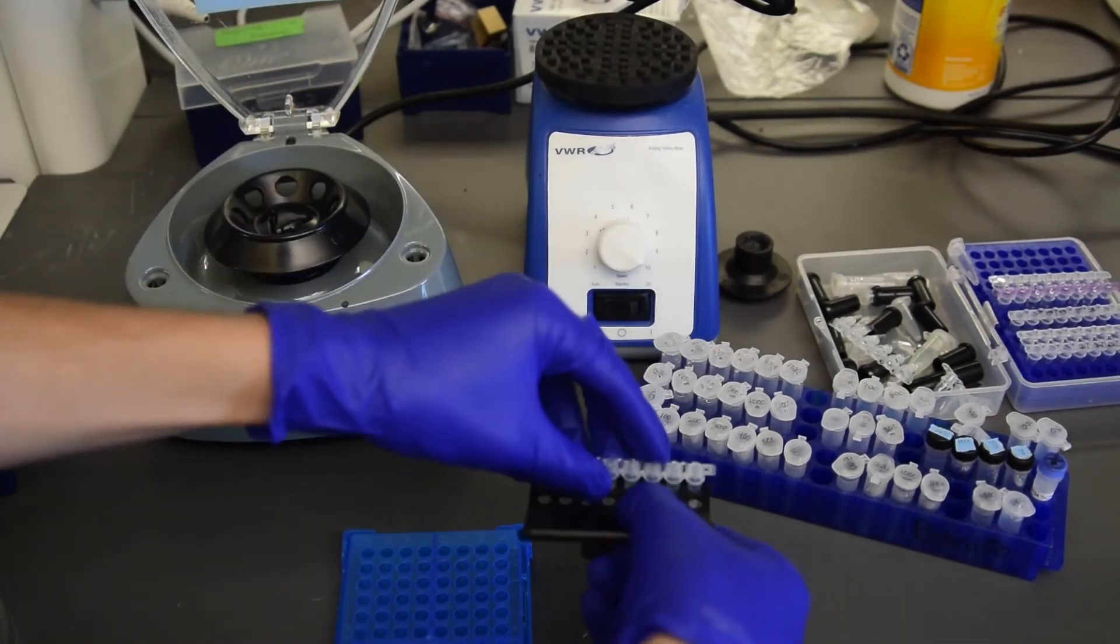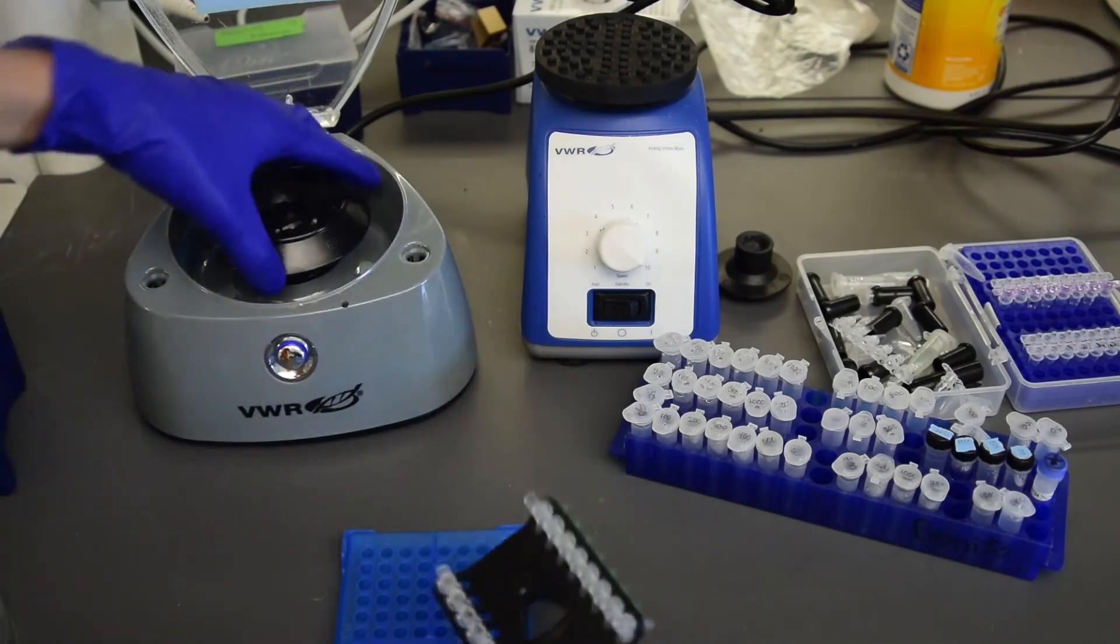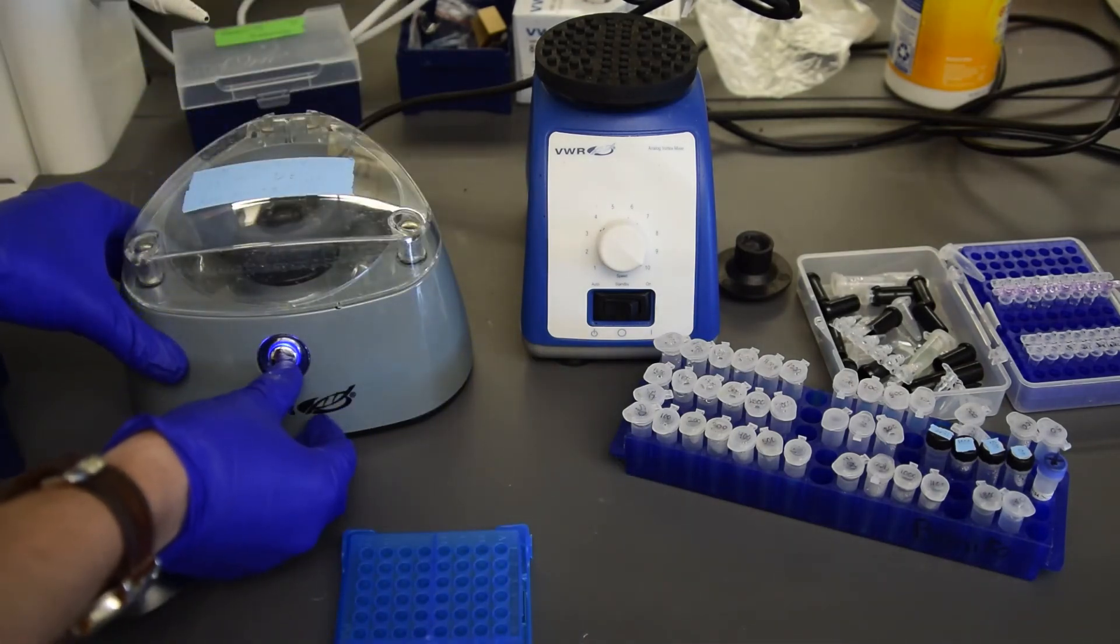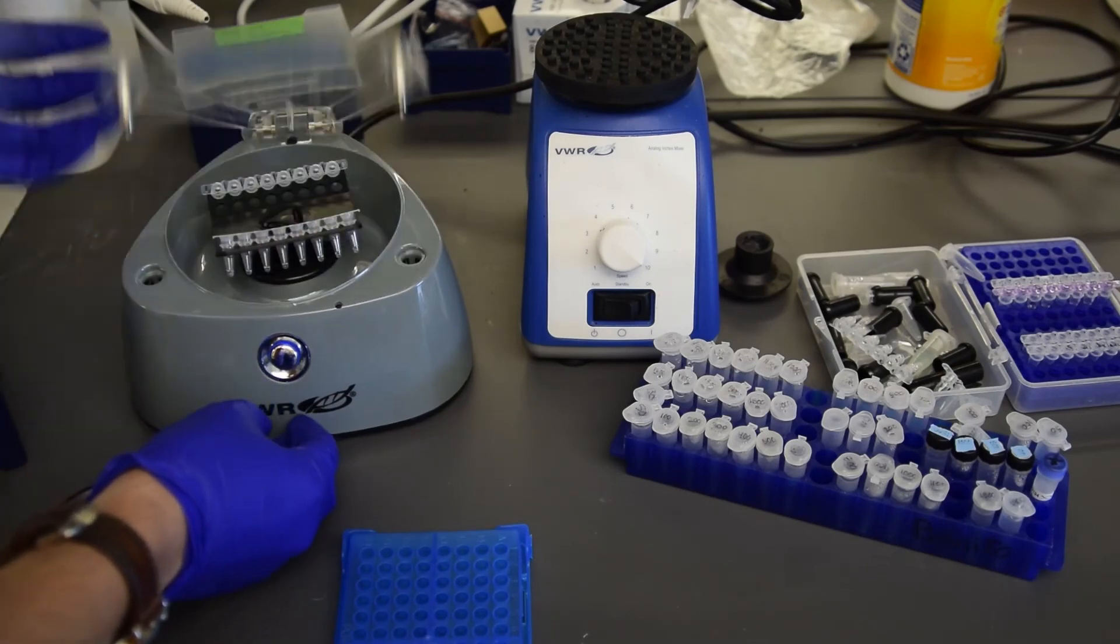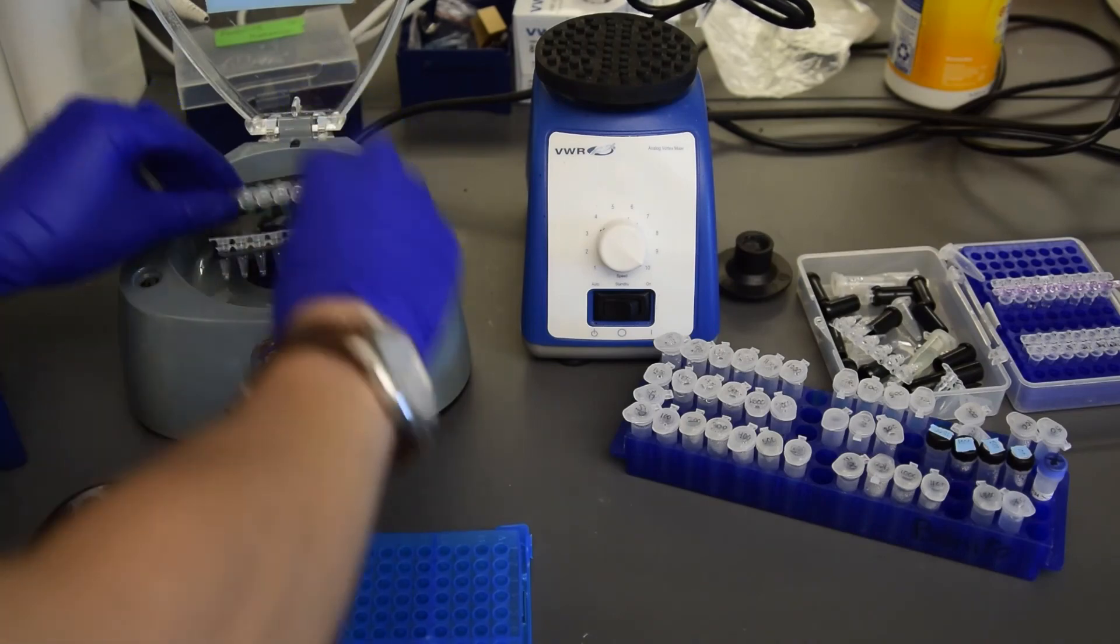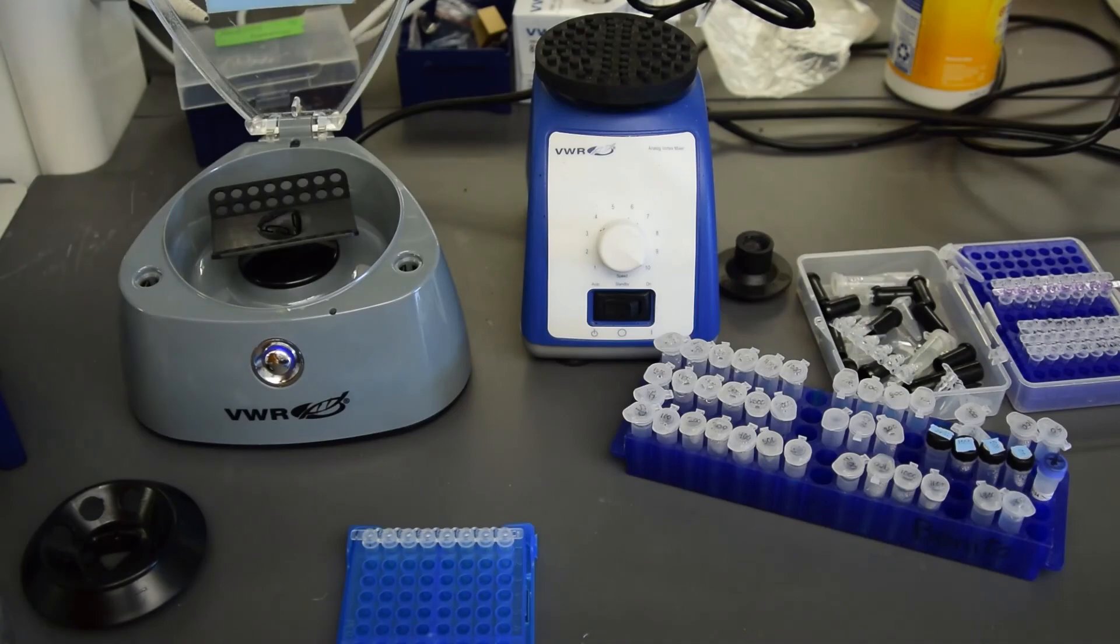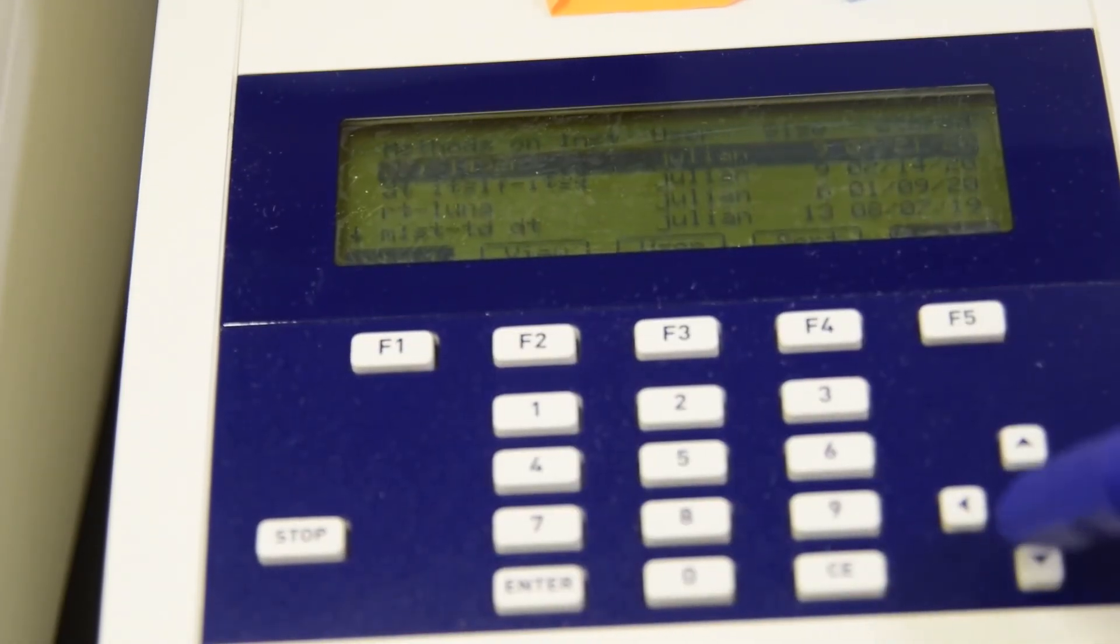Here are our reactions. We want to vortex them to make sure they're well mixed. And then find a balanced strip, so that we can centrifuge it without damaging the centrifuge. We'll put the balanced strip back where it goes, and now the strip that has the reactions is going to go in the PCR machine.